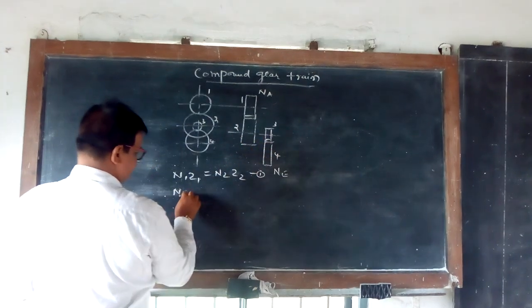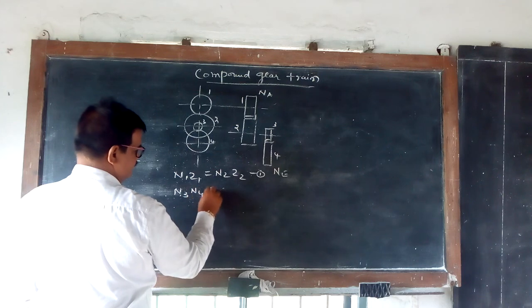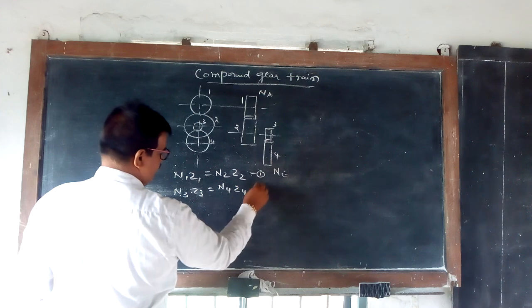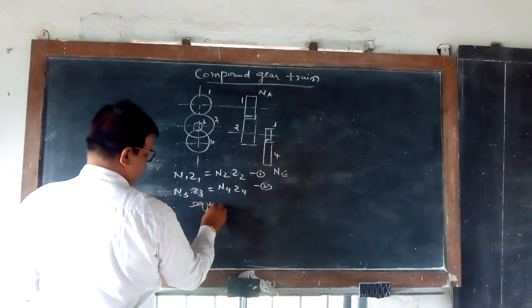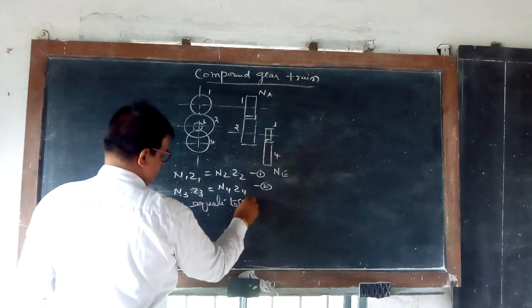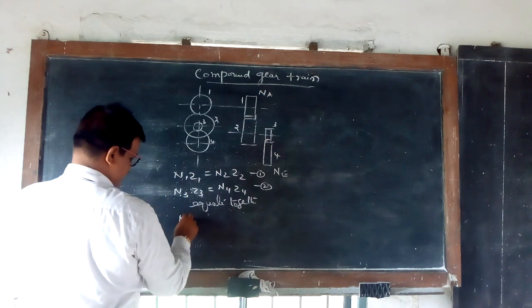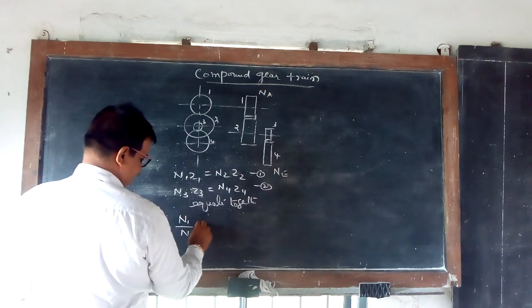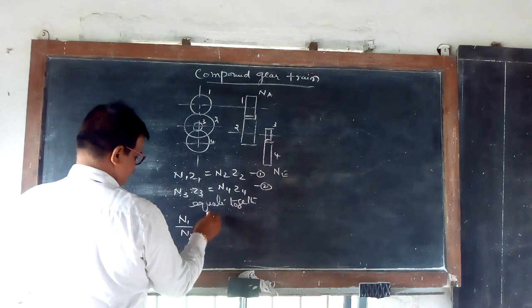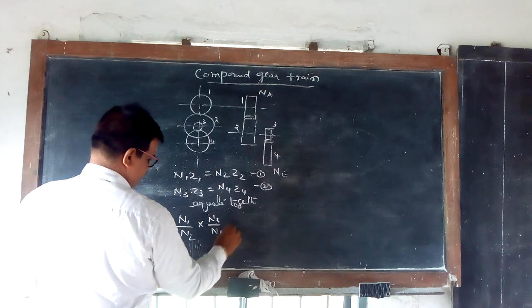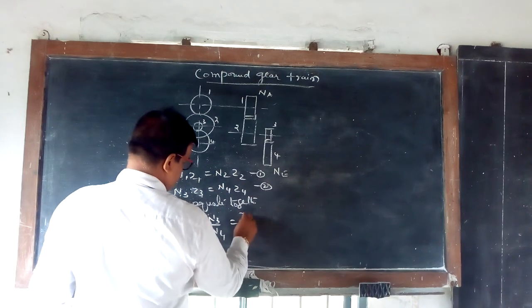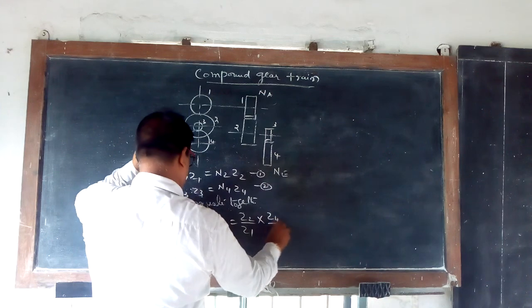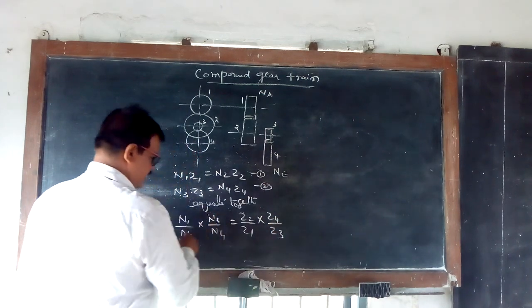Next one is N3 to N4. N3 Z3 is equal to N4 Z4. Equate together, Z4 by Z3.